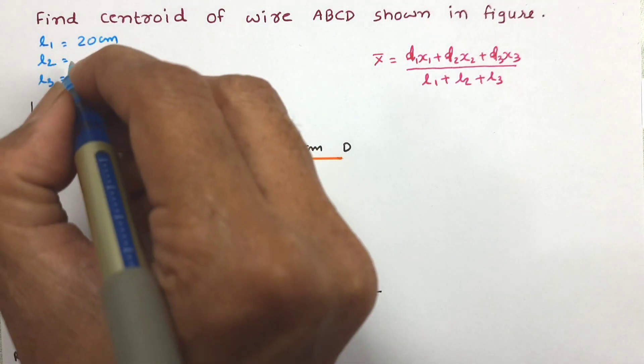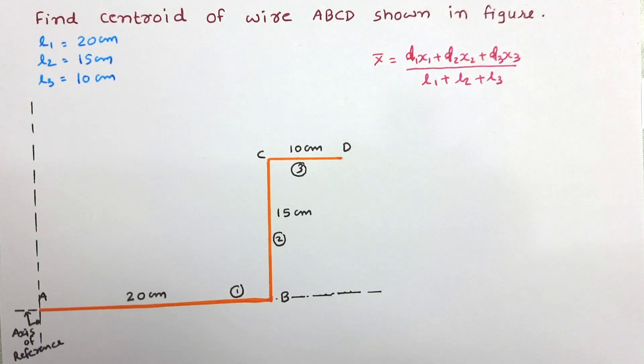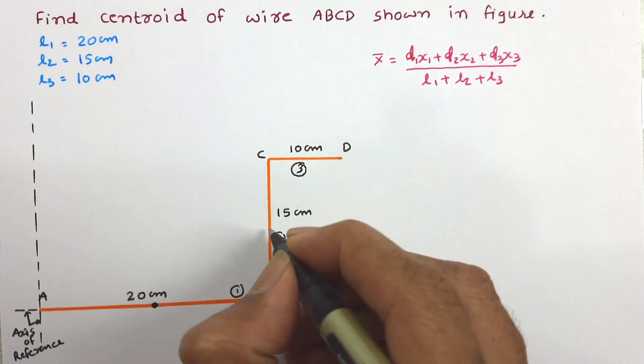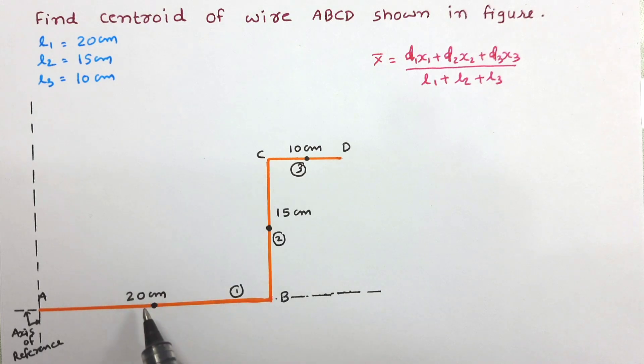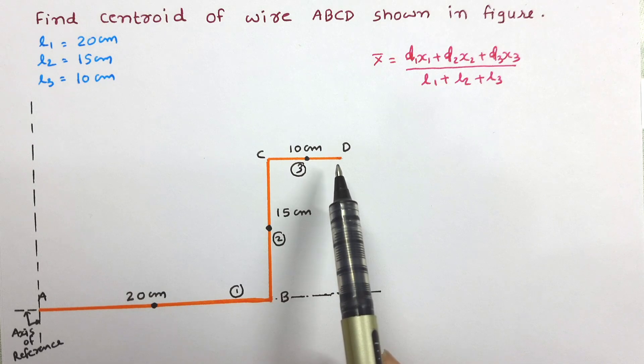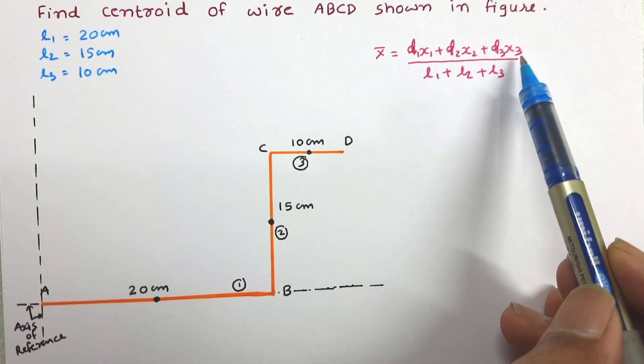Now we need to work out x₁, x₂, and x₃. So for that let us mark centroid of each component first. This point is centroid of wire AB which is at center of it. We know that in a straight wire the centroid is at the center of wire. So these three points are centroids of parts AB, BC, and CD respectively.